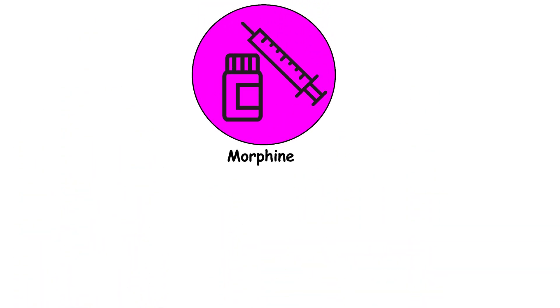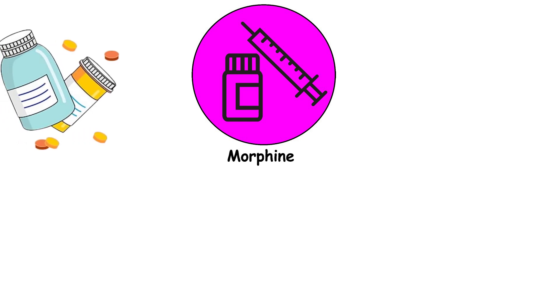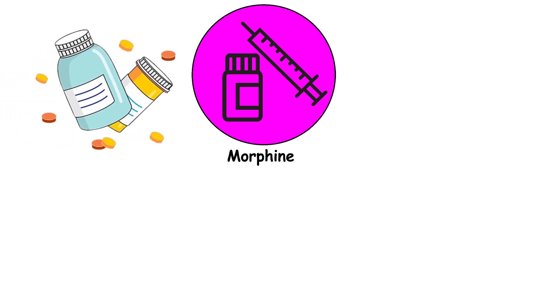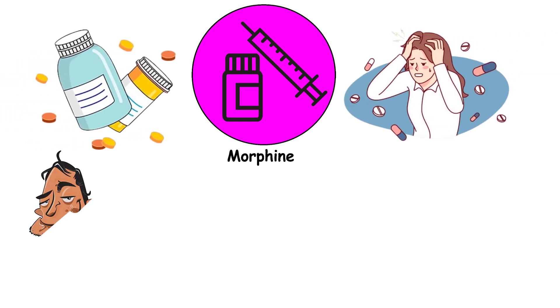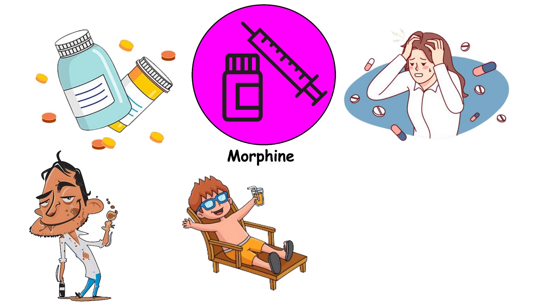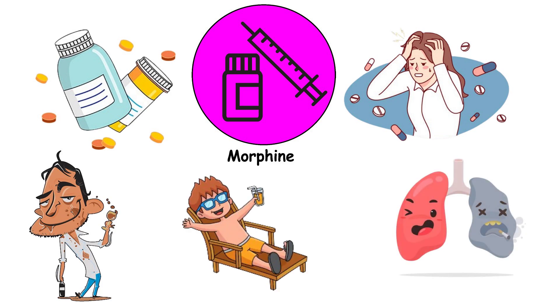Morphine is a potent opioid medication used to relieve severe pain. It produces feelings of euphoria, relaxation, and sedation, but can also cause respiratory depression and physical dependence.